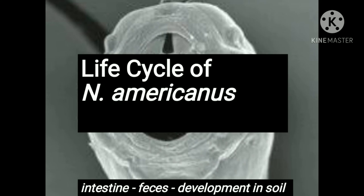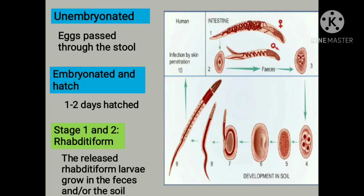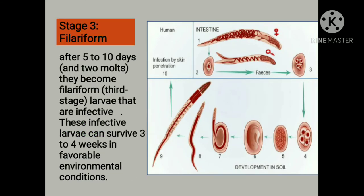Now let's tackle the life cycle of Necator americanus. There are actually 3 factors involved to complete the life cycle of this parasite: the intestine of the host, the feces of the host, and the soil for its development. This worm starts out as an unembryonated egg that passes through the feces of the host. After 1 to 2 days under favorable conditions, the eggs become embryonated and hatch. This first larvae, composed of stage 1 and 2, is known as rhabditiform larvae — these are the free-living larvae. Then it molts to become filariform larvae. It takes 5 to 10 days for a rhabditiform larva to become a filariform larva. This is the infective stage, which is able to penetrate the host's skin.